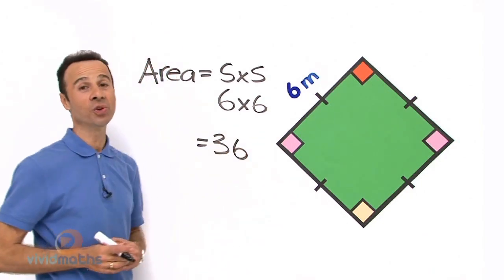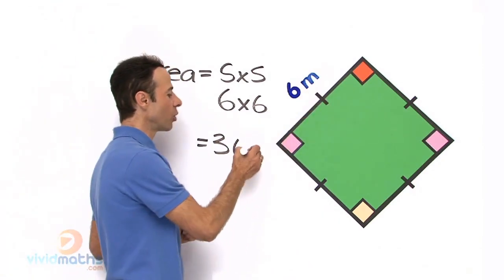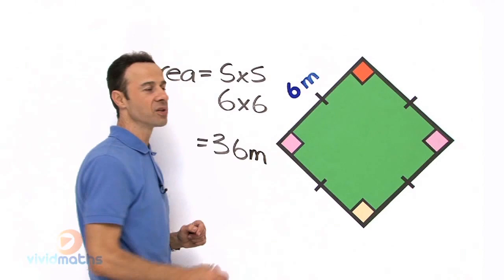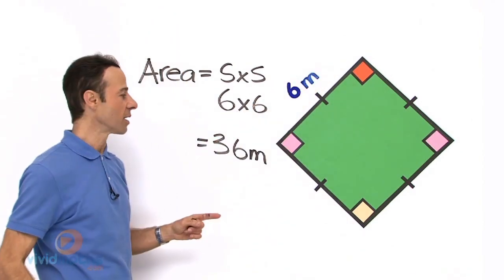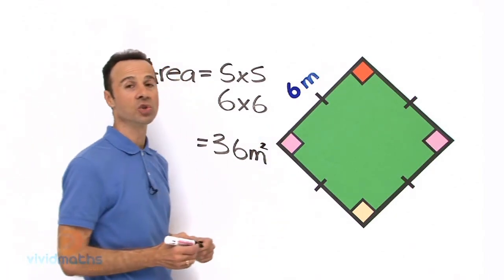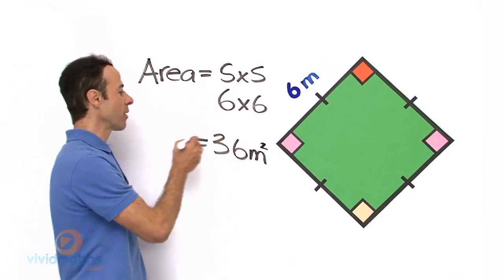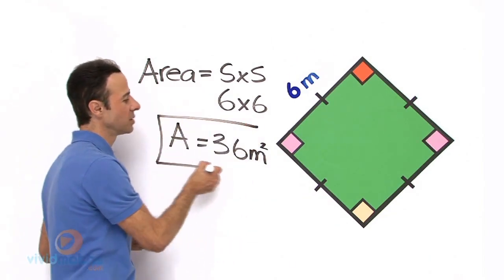Let us take a look at the units. We are given m for meters, so the answer will also have m for meters. Now because it is that times that, there is two lengths that we multiply and it is two dimensional, we write a little 2 there, which means squared. And clearly the area for this green shape is 36 meters squared.